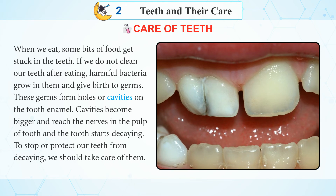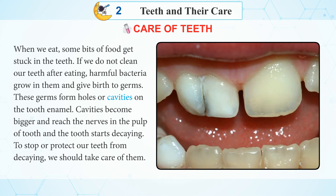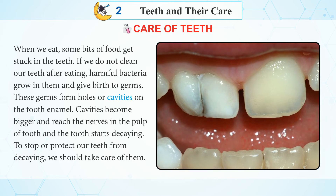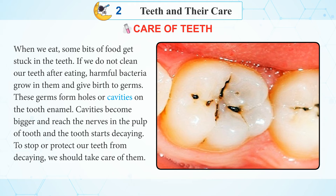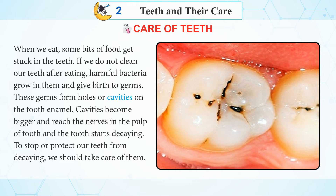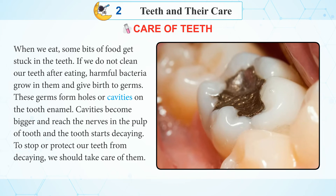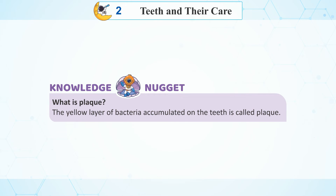Care of teeth. When we eat, some bits of food get stuck in the teeth. If we do not clean our teeth after eating, harmful bacteria grow in them and give birth to germs. These germs form holes or cavities on the tooth enamel. Cavities become bigger and reach the nerves in the pulp of the tooth, and the tooth starts decaying. To stop or protect our teeth from decaying, we should take care of them. The yellow layer of bacteria accumulated on the teeth is called plaque.